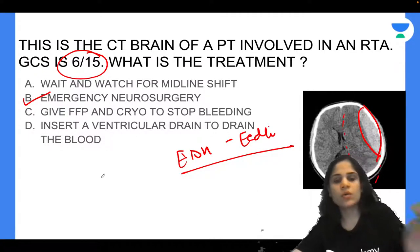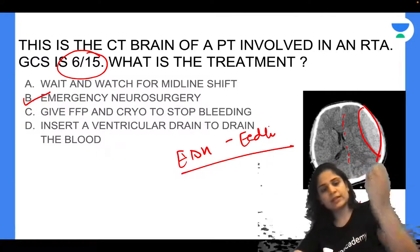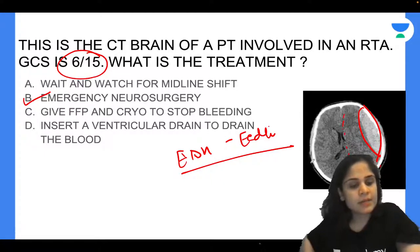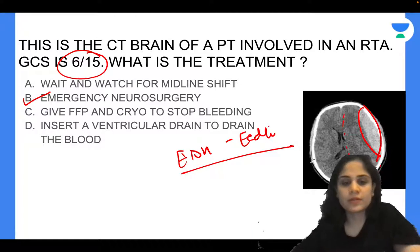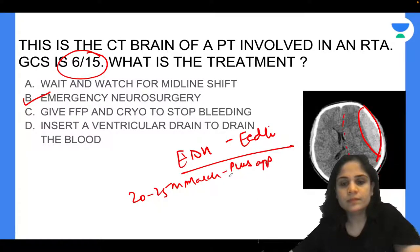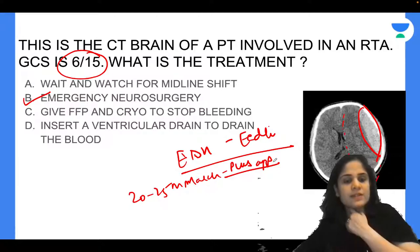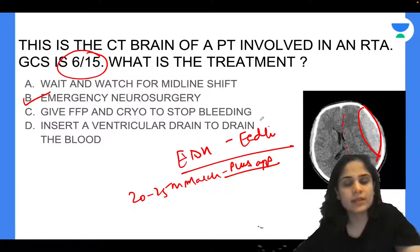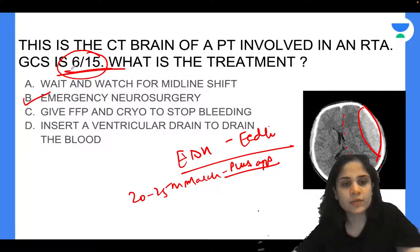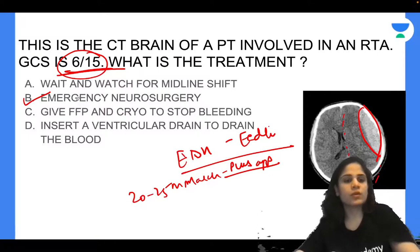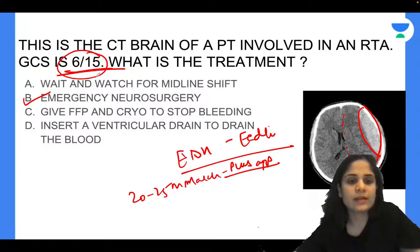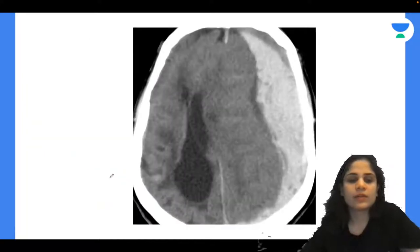Should you intubate this patient now or during surgery? At any GCS less than 8 you must immediately intubate the patient so they do not aspirate. If the GCS was okay, you could wait and watch for midline shift. But with GCS of 6, immediate intubation is required before taking the patient to the operation theater.